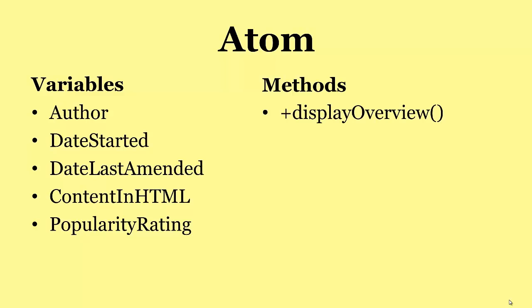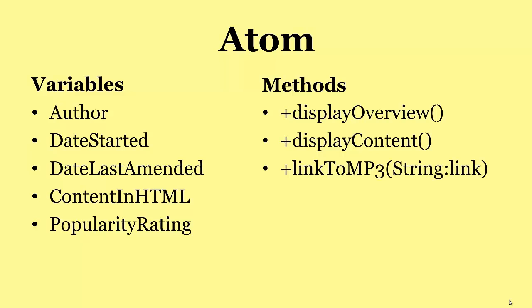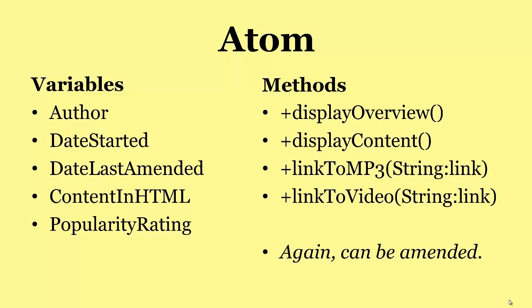What about the methods? Well, we need a public method to display an overview of the atom. We need a public method to display the content. We need to display a link to the MP3, so that would allow us to click on something and the MP3 would play. We need a link to a video. That may be a video that's held locally or it may be a video that's held on the internet somewhere. Again, these things can all be amended. When you think, oh I need another variable or I'll just add a method, then do so. It's your program. It's the logic that matters, not having the logic correct now. It should be as correct as you can, but it doesn't have to be completely correct. Don't get hung up on the detail.